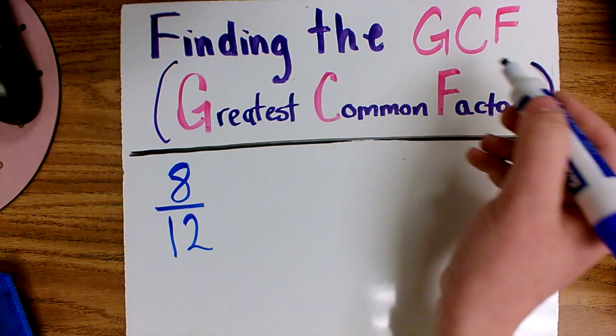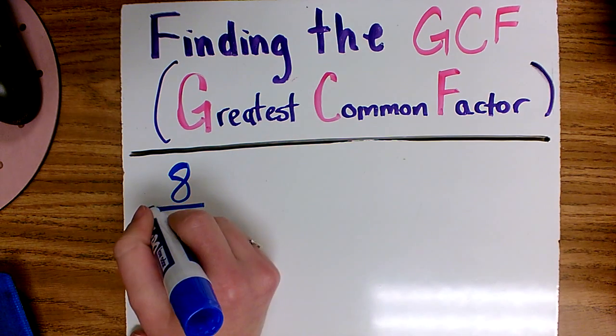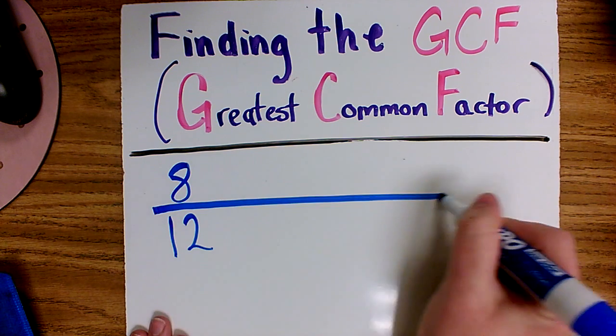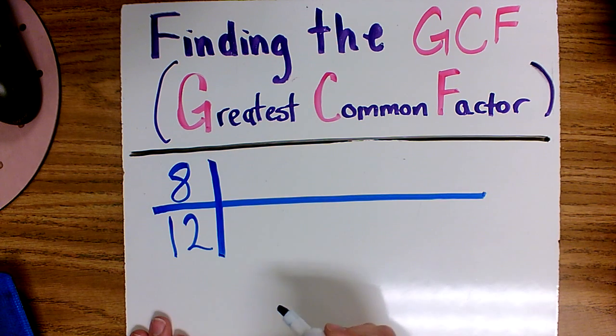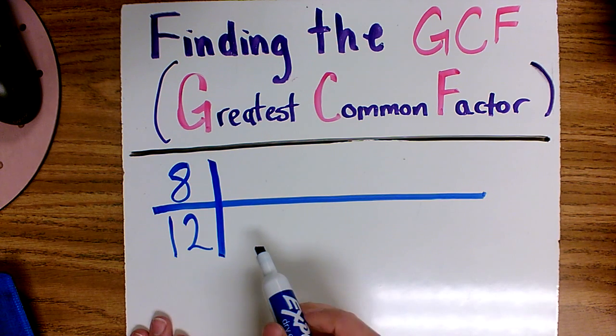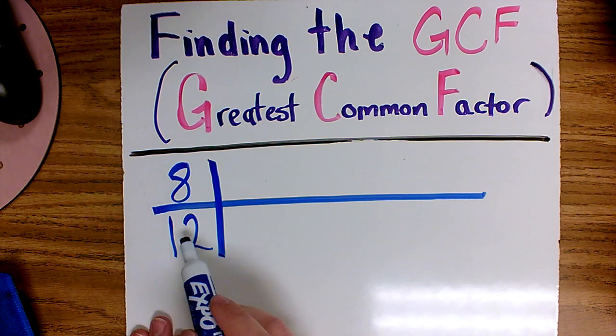We're going to start by finding the greatest common factor by making our fraction into a long t-chart. Then we're going to start writing out our factors for 8 and our factors for 12.